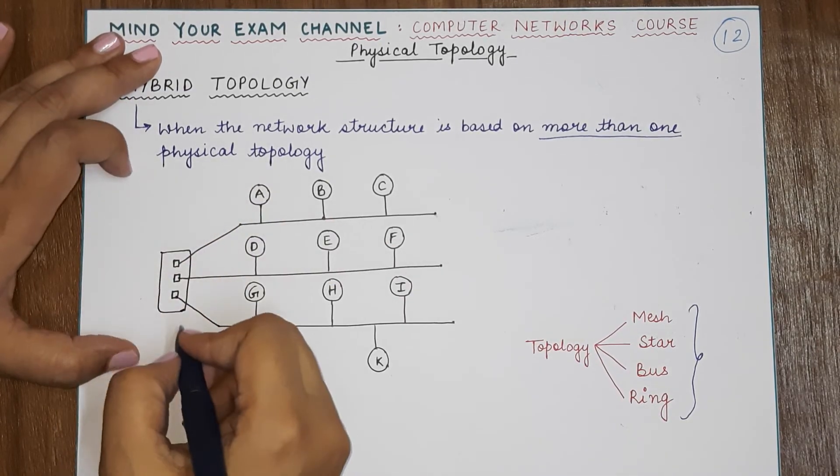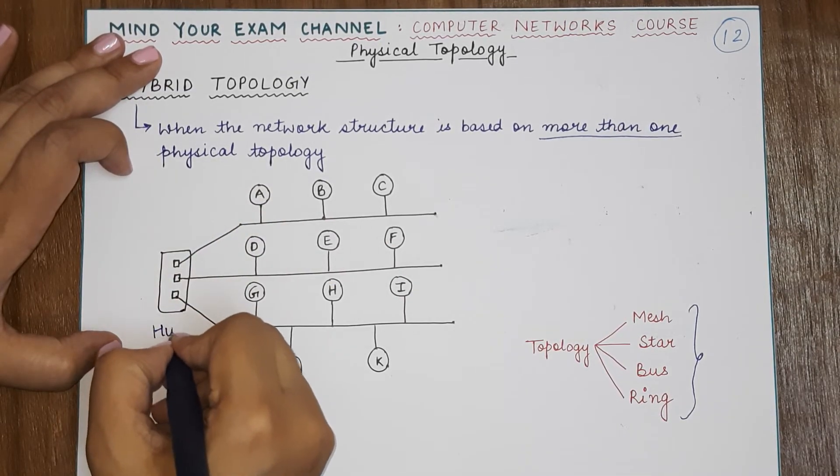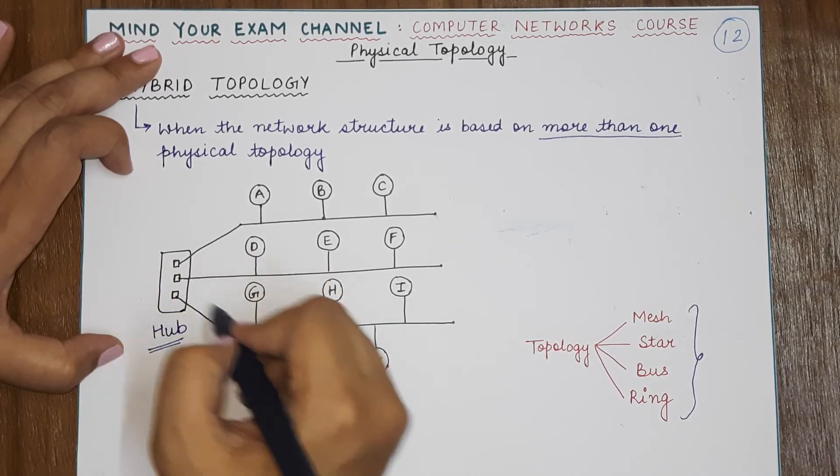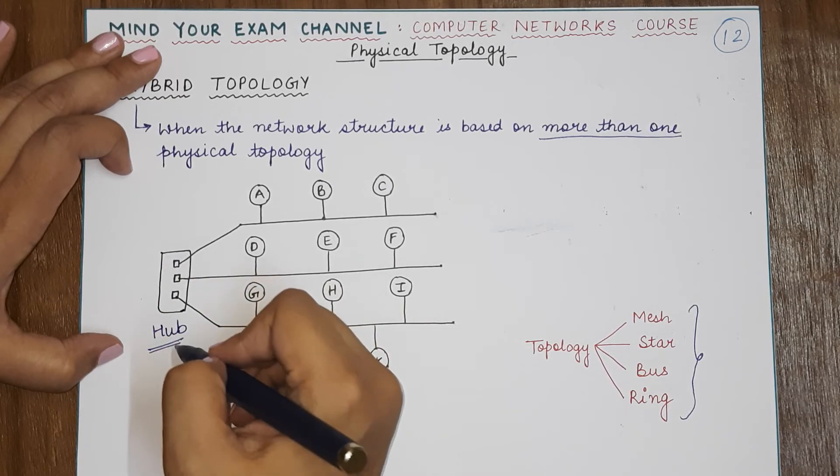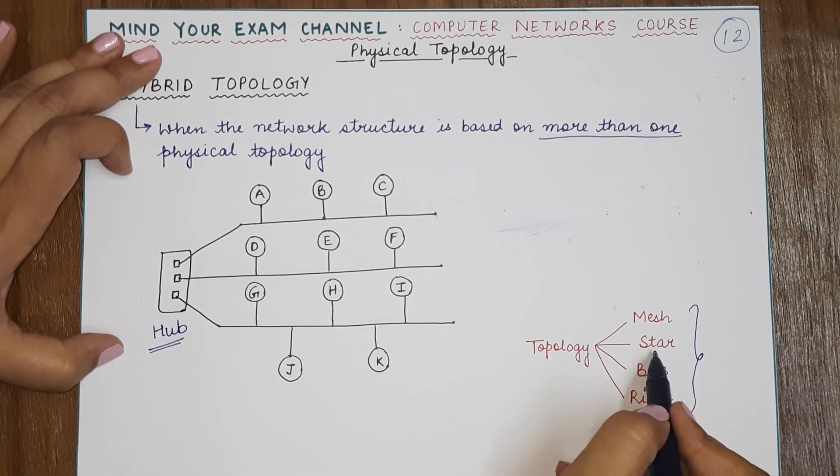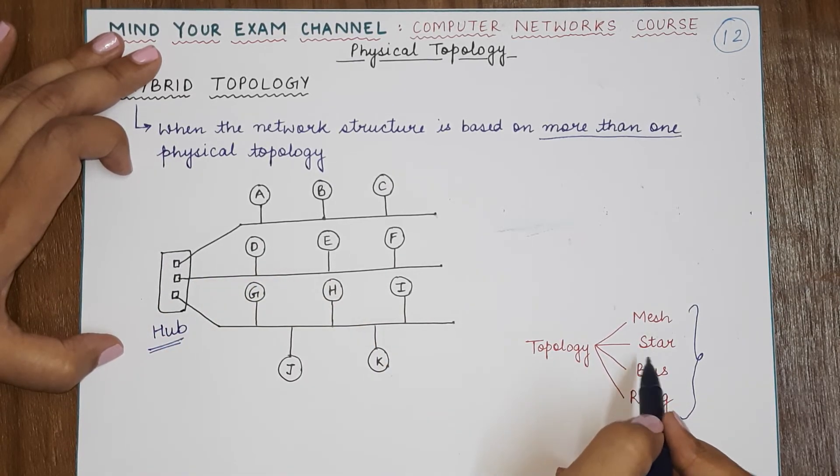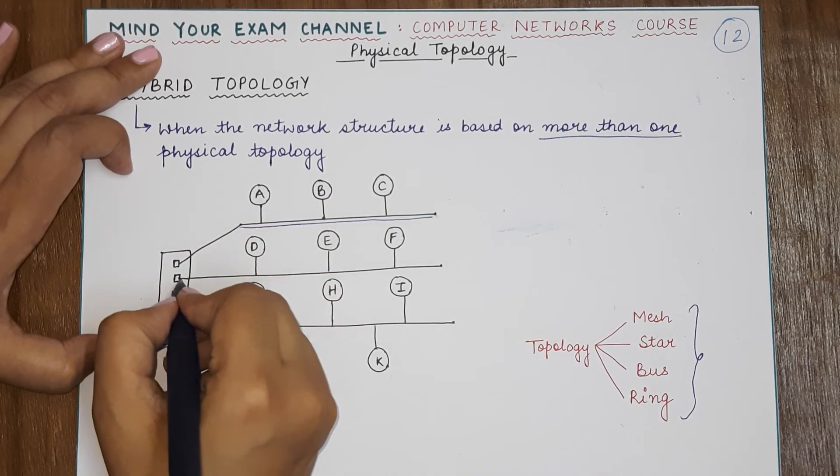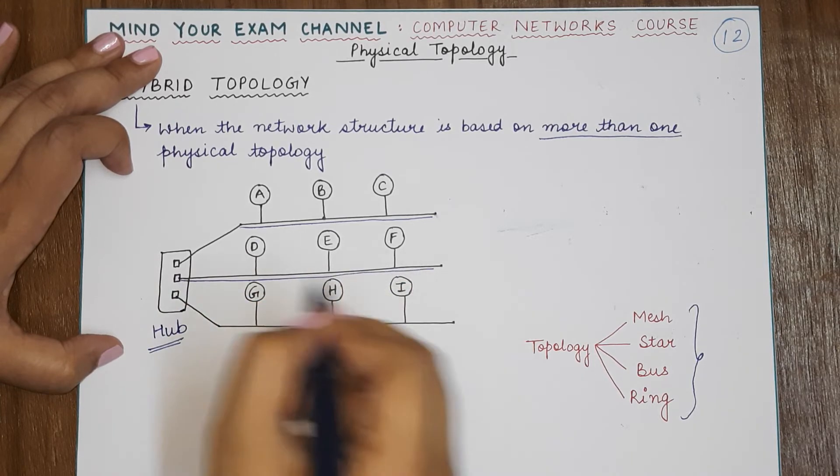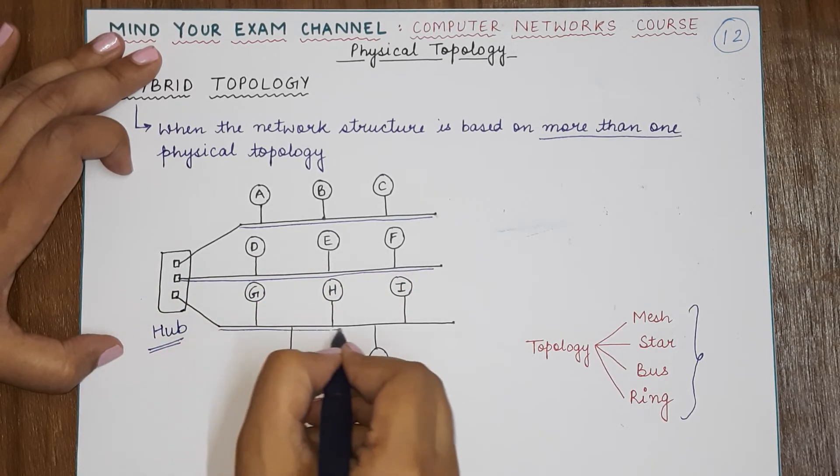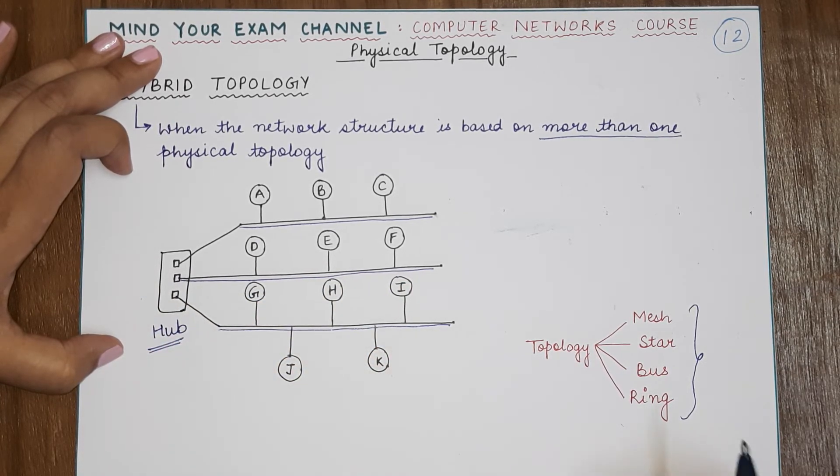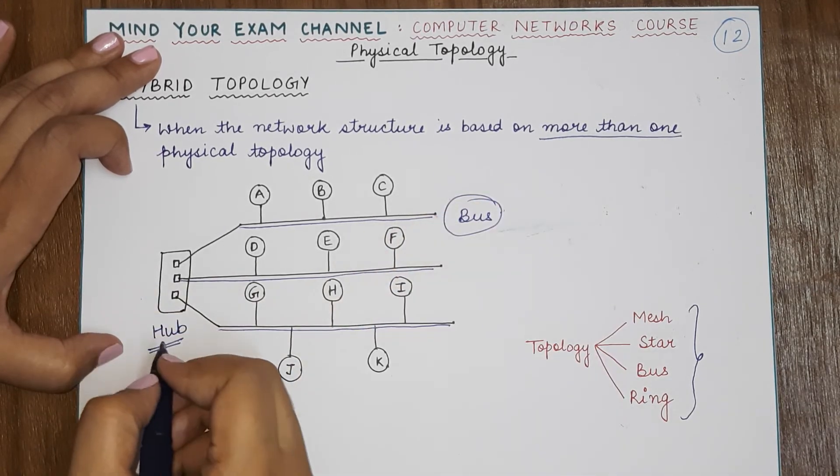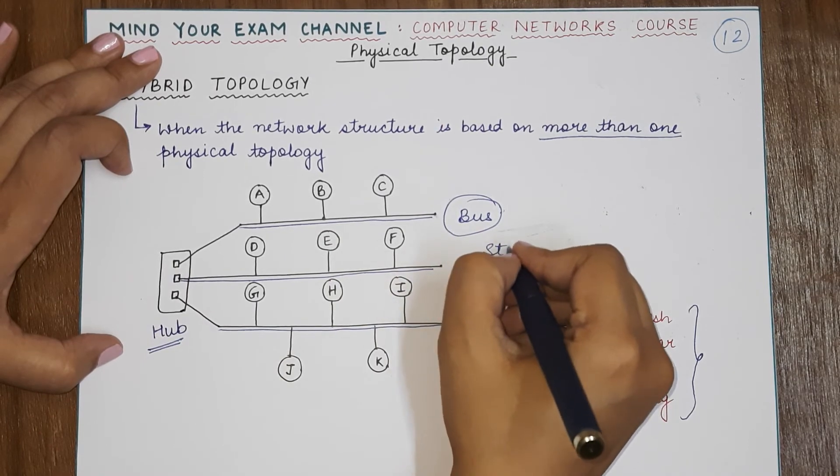Okay, so in this case, this hybrid topology consists of a hub and there are many connections going out through this hub. So it is a star topology in one way, and this particular line which is getting connected—each of the individual channels that are connected through the hub are actually following bus topology. So this particular hybrid topology is a combination of bus and star topology.